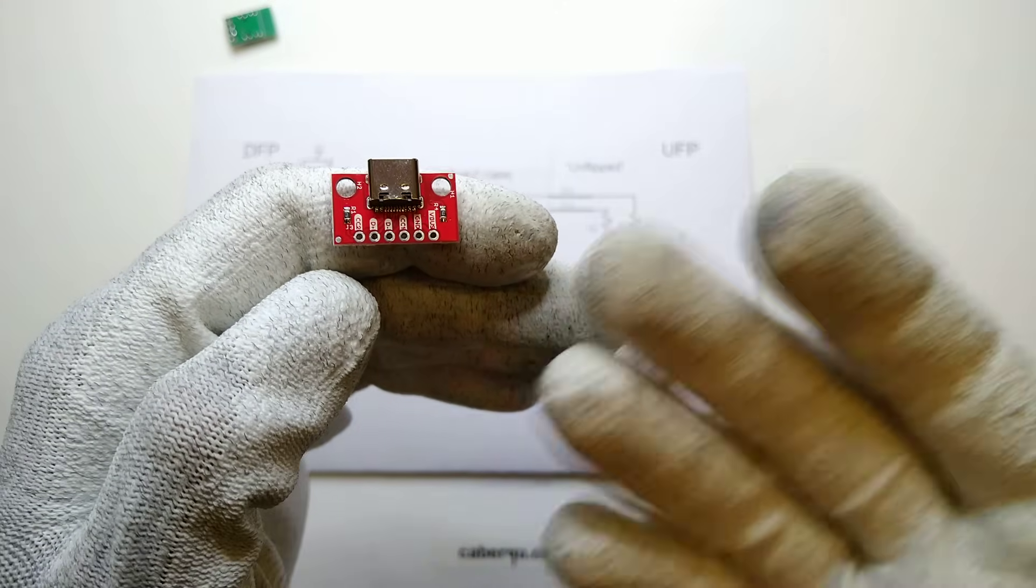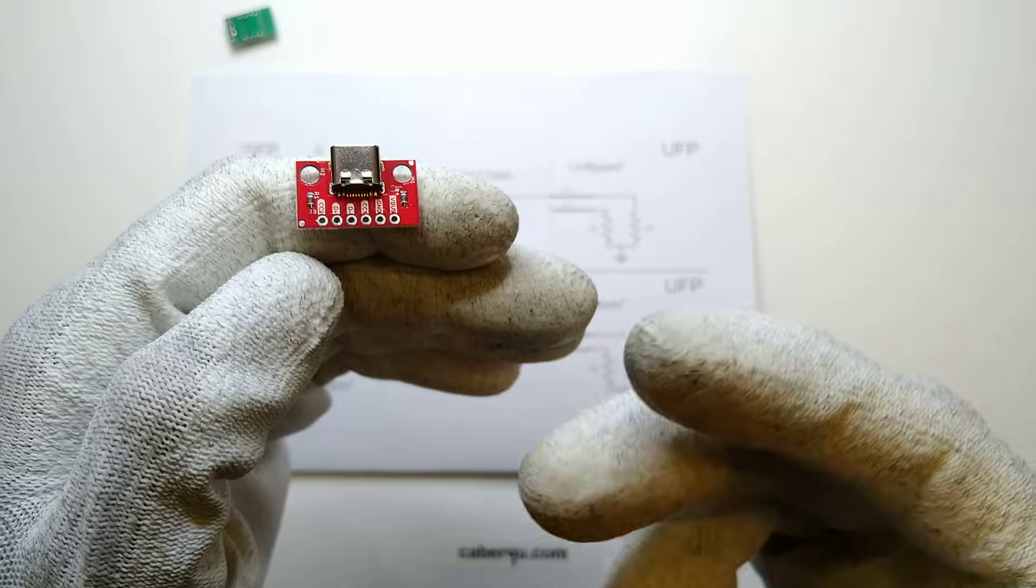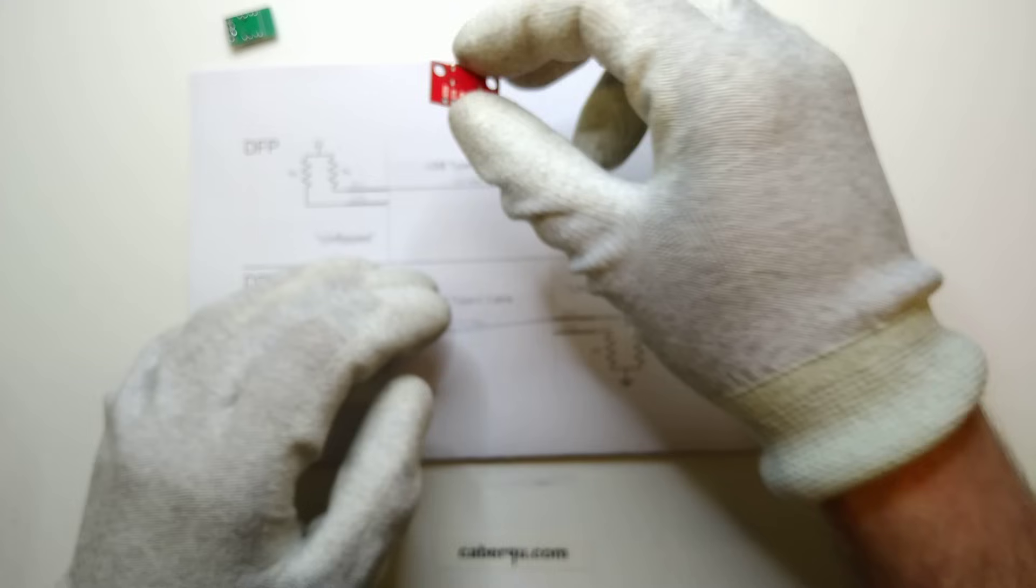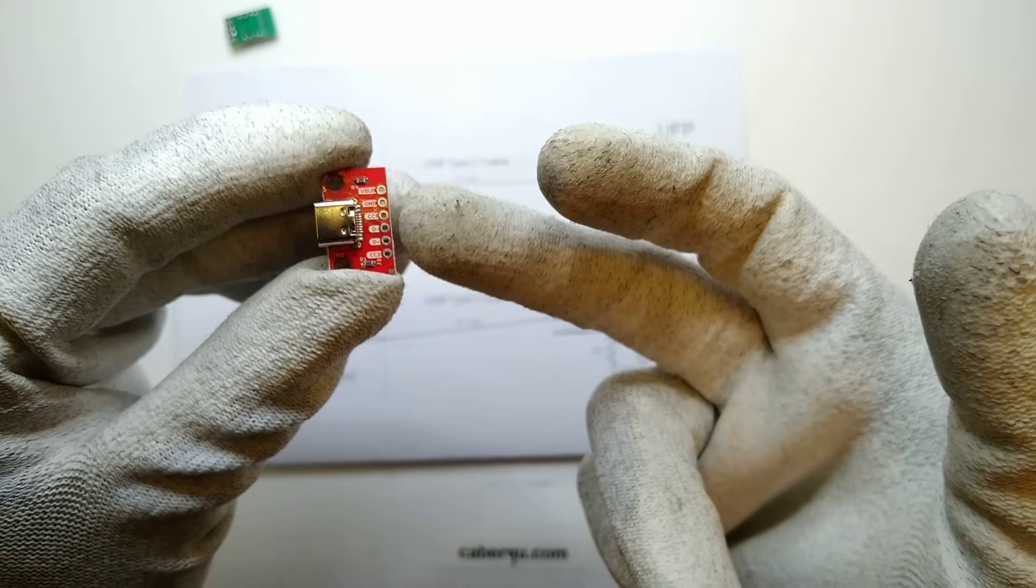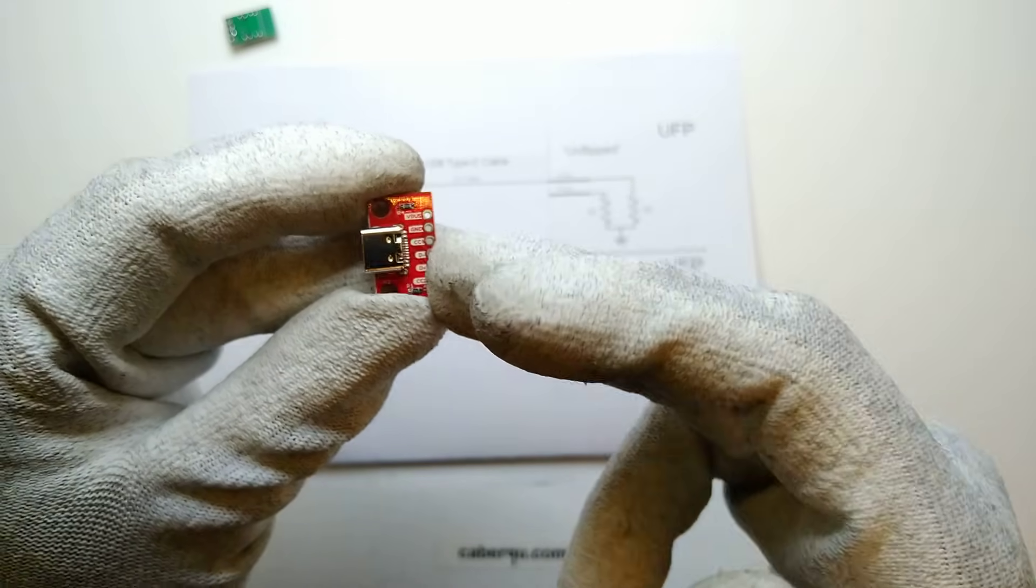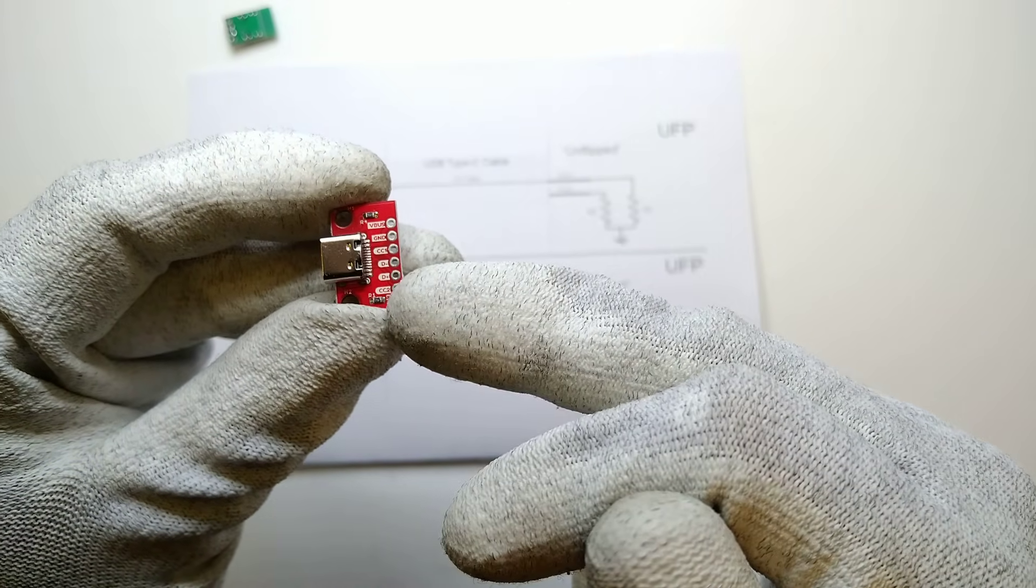And this here, the two pulldown resistors, are the two resistors that we can see here. So that's actually very well implemented, that's exactly what we want to have. And in case we don't want to have a stupid device that can just receive power at 5 volts or 3 amps or below that, we can desolder those two resistors.